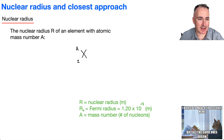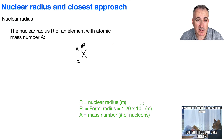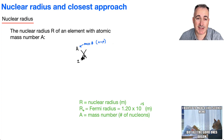For the nuclear radius, let's remind ourselves what a nuclide is. Remember A is the mass number, which tells you the number of nucleons — that's the number of protons plus neutrons. And Z is the atomic number, so that's the number of protons.